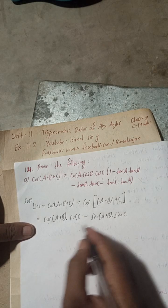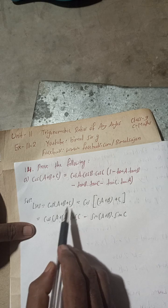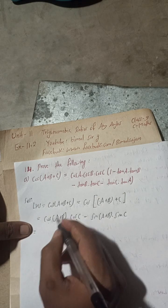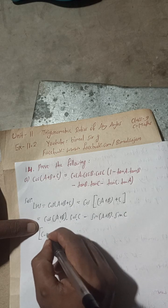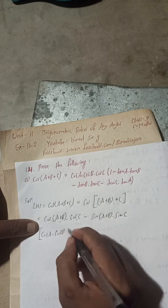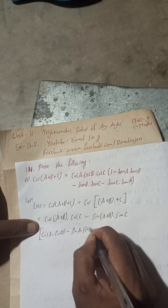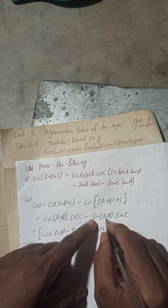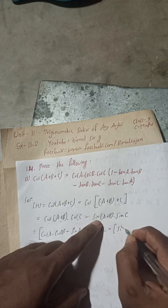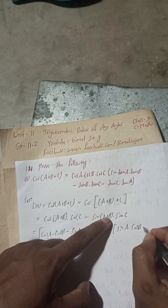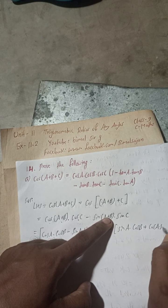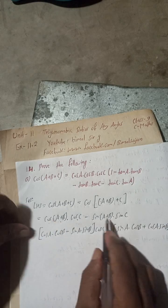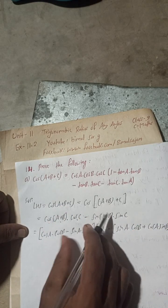Now again we will apply the same formula for cos(A+B). We expand: cos(A+B) = cosA·cosB − sinA·sinB. And for sin(A+B) we use sin(A+B) = sinA·cosB + cosA·sinB. Substituting these back into the expression.